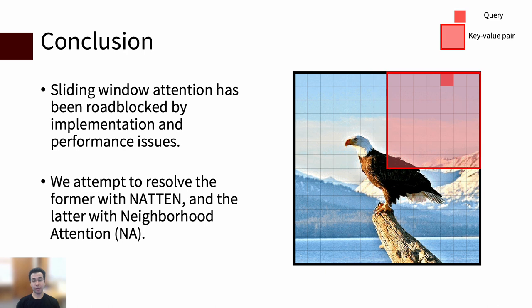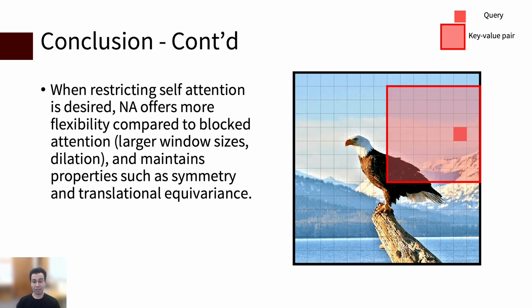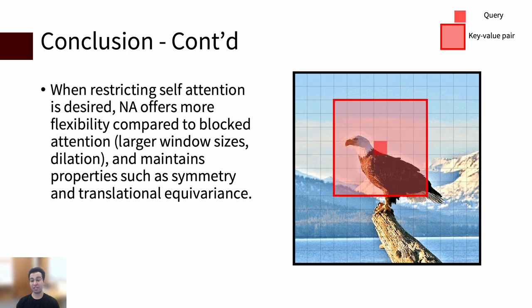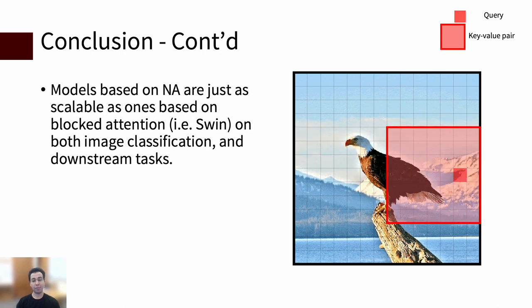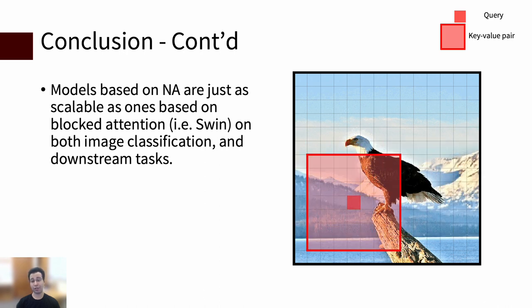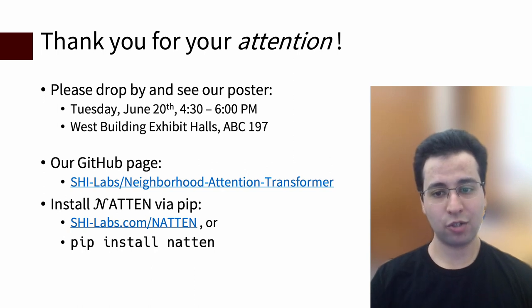In conclusion, we found sliding window attention's primary challenges. We attempted to resolve implementation with our NATEN package, which is still an ongoing effort. And as for performance, the neighborhood property in NA allows it to scale better than sliding window. We note that when localizing self-attention, NA offers more flexibility compared to the standard baseline, aka window attention, while maintaining properties that exist in self-attention and convolutions. And based on experiments, we find that models based on NA are just as scalable in terms of performance, in classification, and downstream tasks. And this concludes our presentation. We hope you found it useful. Be sure to check out our GitHub page and our web page to install NATEN and plug in neighborhood attention into your work today.